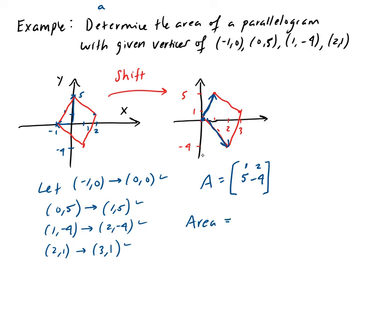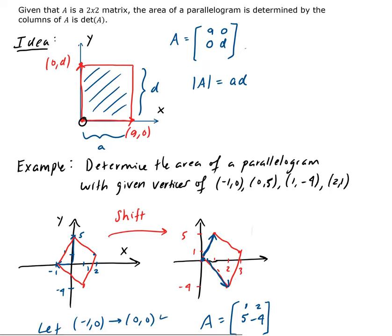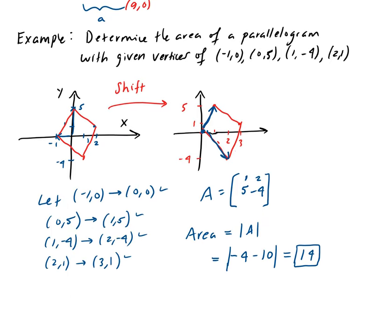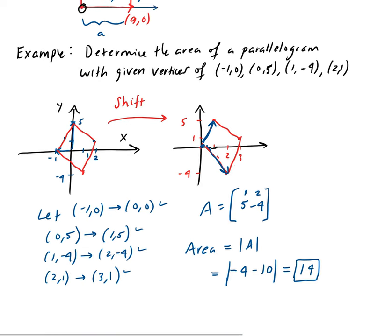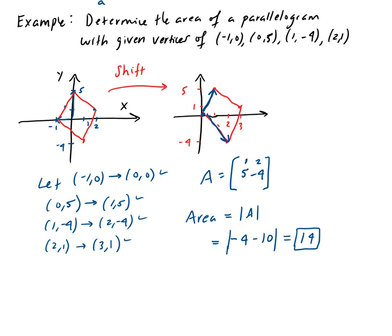The area of this parallelogram equals the determinant of A, which is (1)(-4) minus (5)(2) = -4 - 10 = -14. We take the absolute value because it's an area, so this gives us 14. This is a nice property of using determinants. You have a shape defined by coordinates, do a shift so the leftmost point goes to the origin, then apply this theorem. There are other geometric examples using the determinant that are a bit more involved.